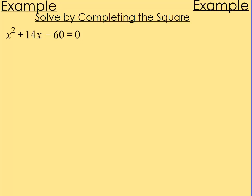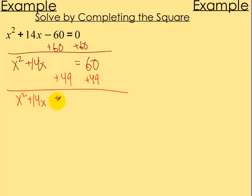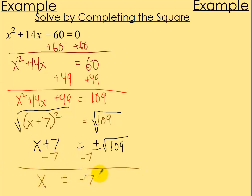Let's try this one — solve by completing the square. Add 60 to both sides: x squared plus 14x equals 60. Half of 14 is 7, and 7 squared is 49, so add 49 to both sides: x squared plus 14x plus 49 equals 109. Factor the left: x plus 7 squared equals 109. Square root both sides: x plus 7 equals plus or minus radical 109. Subtract 7 from both sides: x equals negative 7 plus or minus square root of 109. Since 109 is prime, you can't reduce that — that's the final answer.